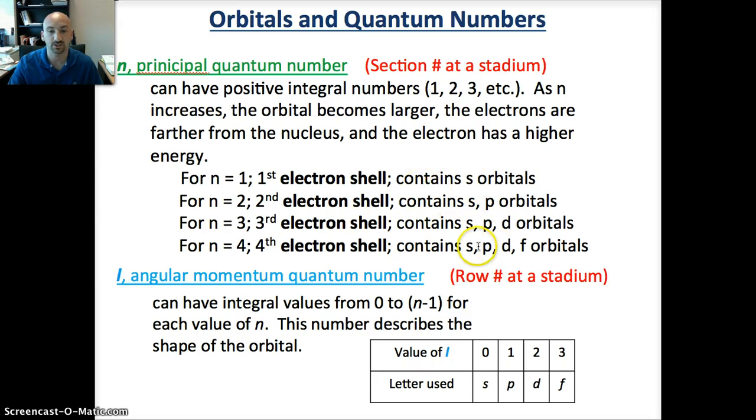Well how do we know what orbitals are present? That's from the L, the angular momentum quantum number, which is our row number. Now we're narrowing down where our seat is. These can have integral values from 0 to N minus 1 for each value of N. This number tells us the shape of the orbital: S, P, D, or F. So if the value of L is 0, 1, 2, or 3, that pertains to either S, P, D, or an F orbital.